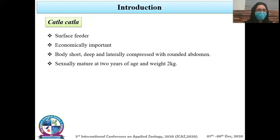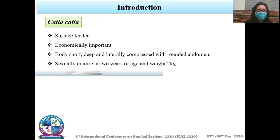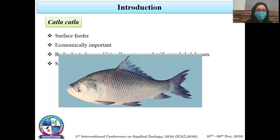The fish species used was Catla catla. Catla catla is a surface feeder and economically important. It is broad, short, deep, and laterally compressed with an upturned mouth and an abdominal section. The fingerlings used were two weeks of age and weighed two grams.